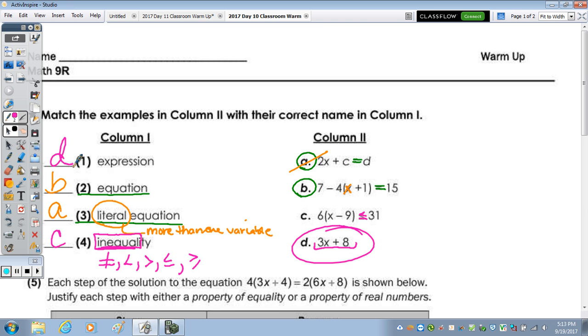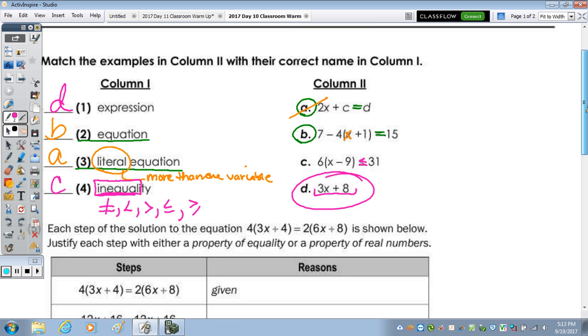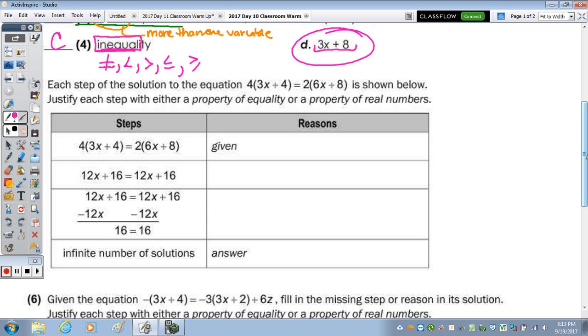Okay, number 5. It says each step of the solution to the equation 4(3X + 4) = 2(6X + 8) is shown below. So here are the steps to the solution. Justify each step with either a property of equality, or a property of real numbers. So we need to follow up with the name of each property. So here's the given, here's the original equation.